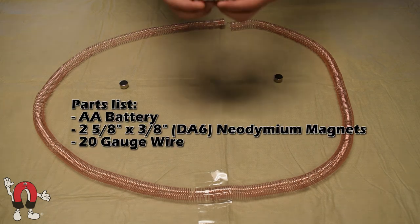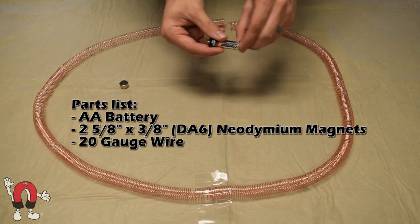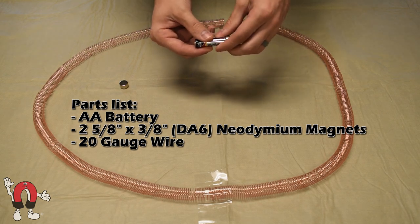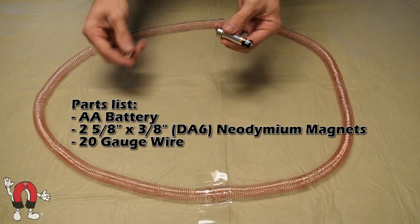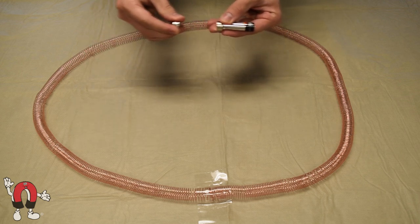You can see here how we put together this little train. This is simply a double-A battery. We used two of our 5-8 by 3-8 magnets. You want to make sure the north pole is facing outwards on both sides.